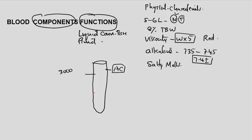What we get after centrifugation: approximately 44% of the blood is the packed red blood cell layer — this is the hematocrit. Above it is a very thin layer called the buffy coat.